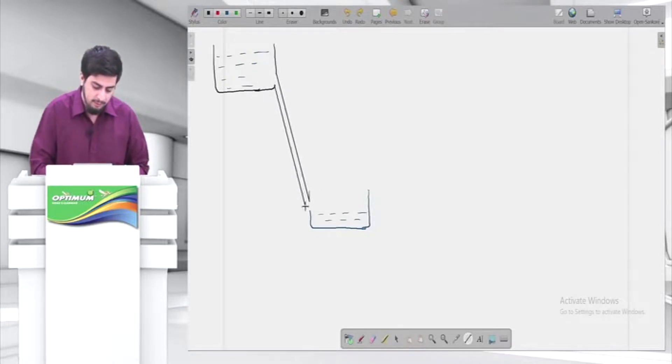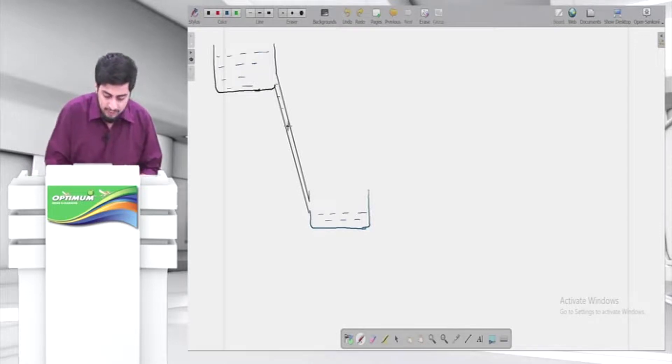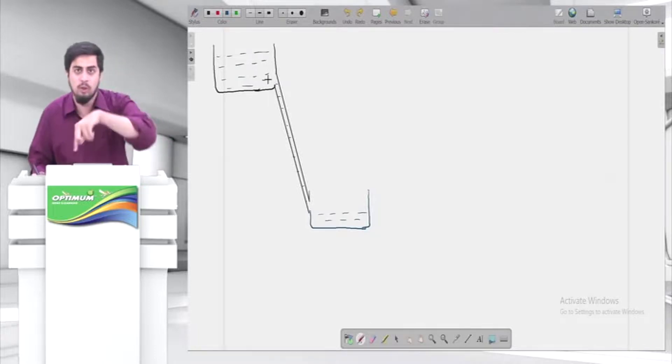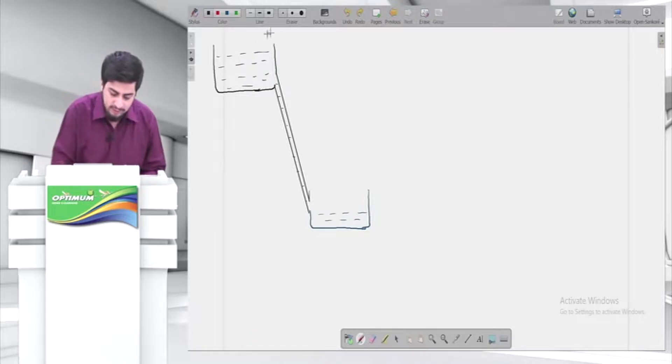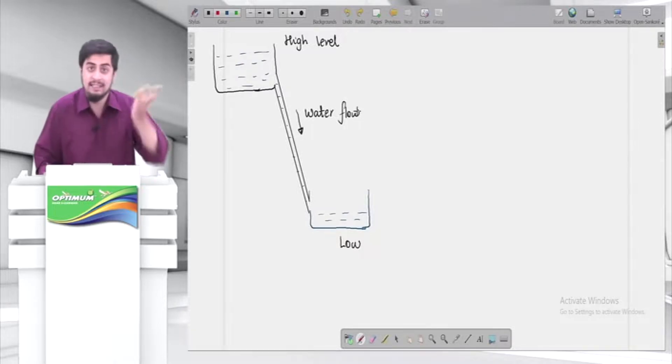So friends, when I connect a pipe from this tank to this tank, what will happen? Water will start flowing. So water will start flowing from the higher level to the lower level. A tank, one tank is at a high level, other tank is at a lower level. So I can say this is high level tank. This is a low level. So water will flow from high level to low level.